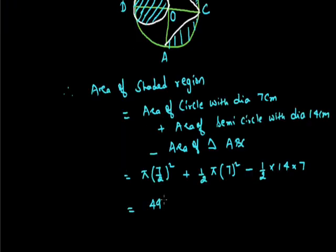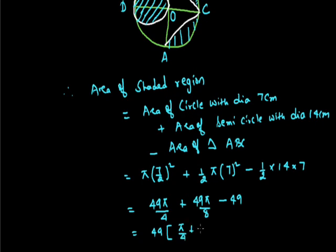Therefore area of shaded region equals area of circle with diameter 7 cm plus area of semicircle with diameter 14 cm, which gives 49 pi by 4 plus 49 pi by 8 minus 49. With 49 common, this equals 49 times (pi/4 plus pi/8 minus 1). By solving this equation, taking pi equal to 22/7, we get 66.5 cm squared. So this is the area of the shaded region.